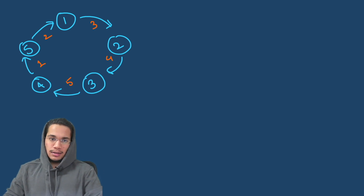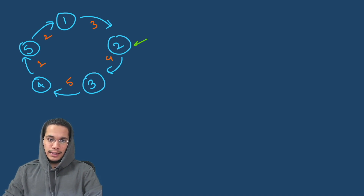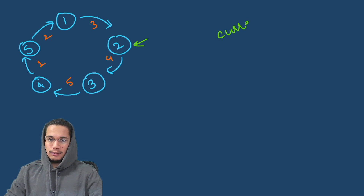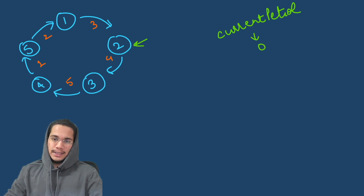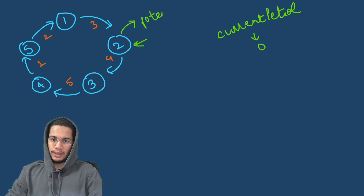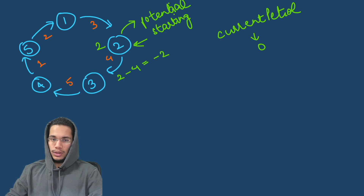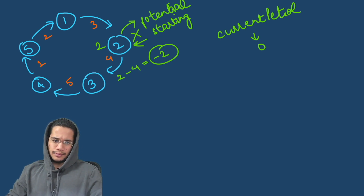Now for the second phase we find the actual starting index. We maintain a variable for current petrol available, and we consider whichever point we are at as the potential starting point. Starting from pump zero: we have 2 units, need 4 to reach the next, so current becomes −2. Since it's negative, this cannot be the correct starting point — we cannot even reach the next station — so we move on. We then consider the next pump as our potential start: 3 units available, need 5, gives −2 again, so this also cannot be the answer.